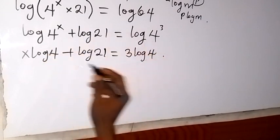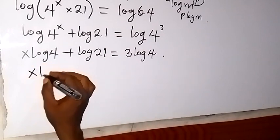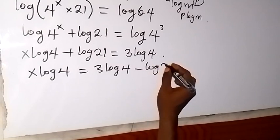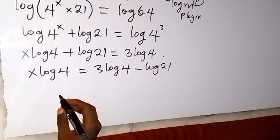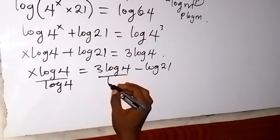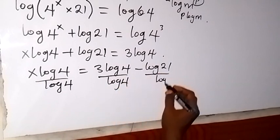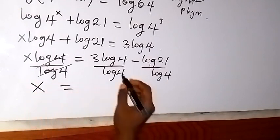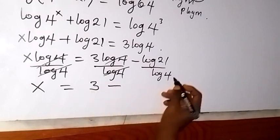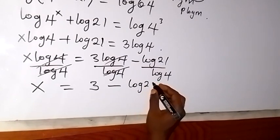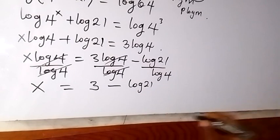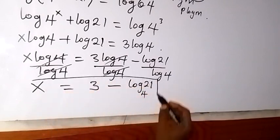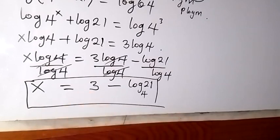Since we are finding the value of x, we move log 21 to the other side — it becomes minus — so we have x log 4 equals 3 log 4 minus log 21. Then we divide through by log 4 to isolate x. So x equals 3 minus log 21 over log 4. Using change of base, log 21 over log 4 can be written as log 21 base 4. Therefore x equals 3 minus log 21 base 4.